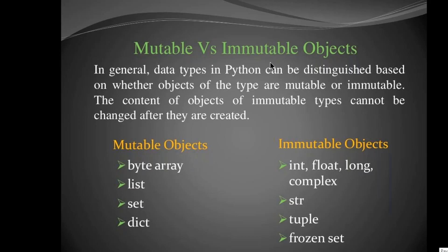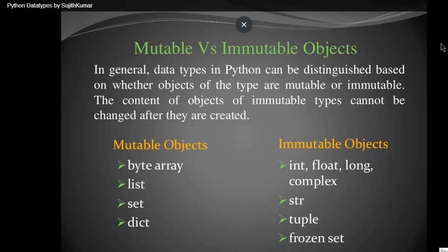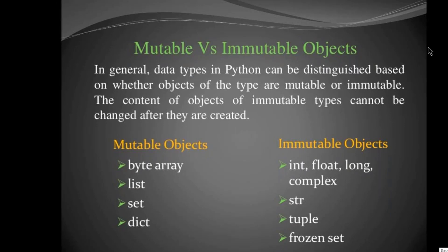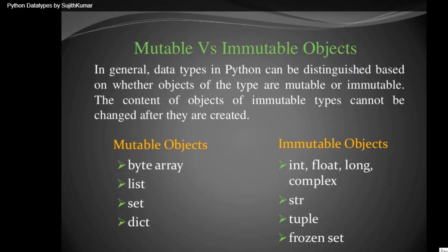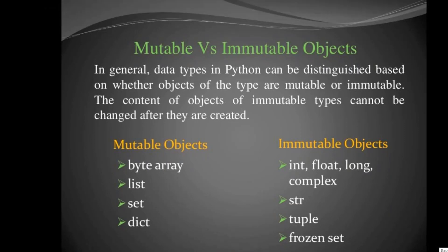There are two types of variables: mutable and immutable. Immutable variables are int, float, long, complex, string, tuple, and frozen set. These are all immutable — once you assign a value to the variable, it is stored permanently in RAM. If you try to store a new value in that variable, it doesn't accept it; instead, it creates a new memory location for the new value.